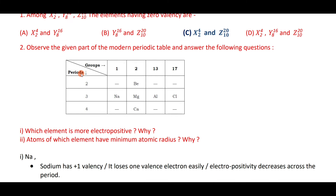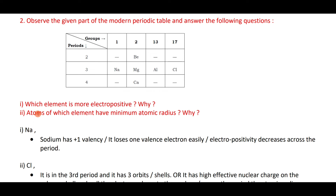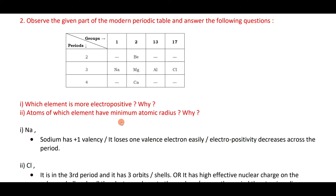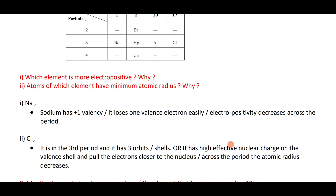From the modern periodic table, sodium is more electropositive because it loses one valence electron easily and electropositive character decreases across the period. Chlorine has the minimum atomic radius because atomic radius decreases along a period as the effective nuclear charge on the valence shell increases.